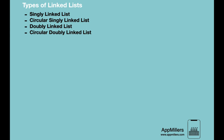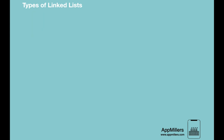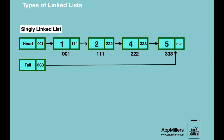First, the singly linked list. In a singly linked list, each node stores a value and a reference to the next node in the list — it does not have any reference to the previous node. Each node has two parts: the value (in our case 1, 2, 4, 5) and the reference to the next node, which is the physical address of the next node in memory.